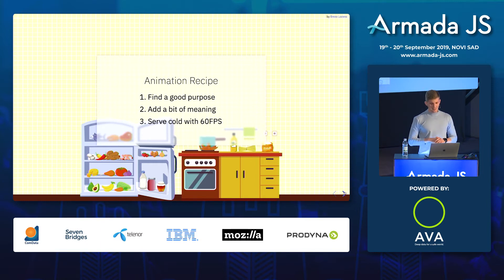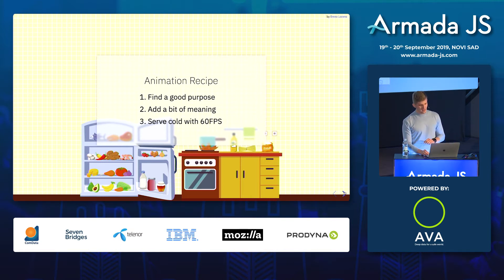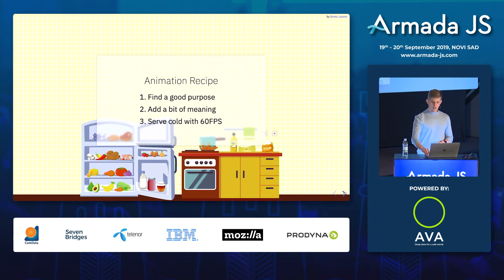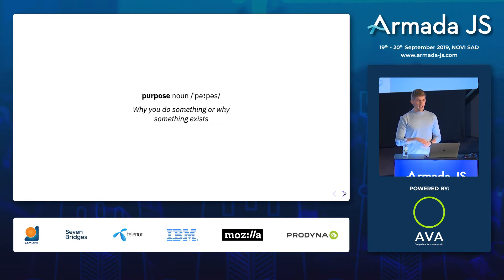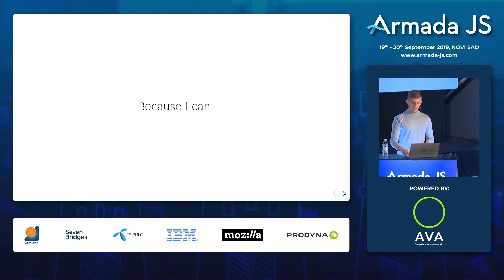I'll walk you through all these steps, and we'll start with finding a good purpose. If you go to a dictionary, it says why you do something or why something exists. And if the answer to that question is 'because I can,' it's a red flag.